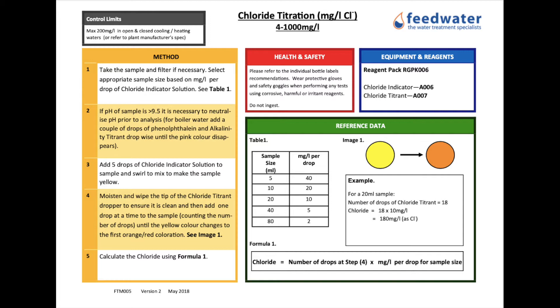If the pH of the sample is greater than 9.5 it is necessary to neutralise pH prior to analysis. For boiler waters add a few drops of phenolphthalein and alkalinity titrant drop wise until the pink colour disappears.